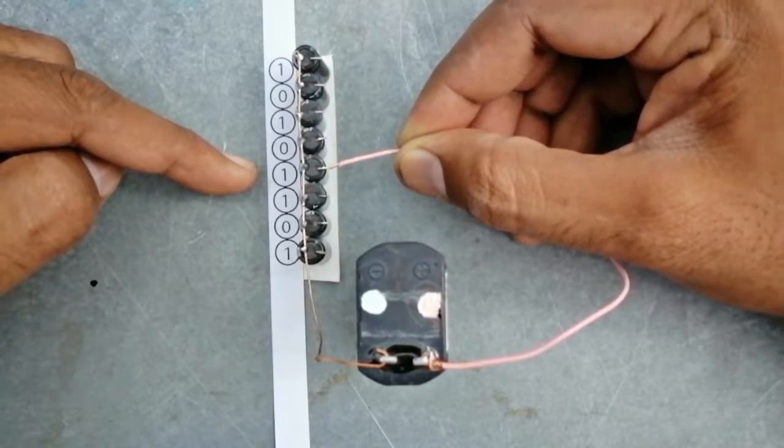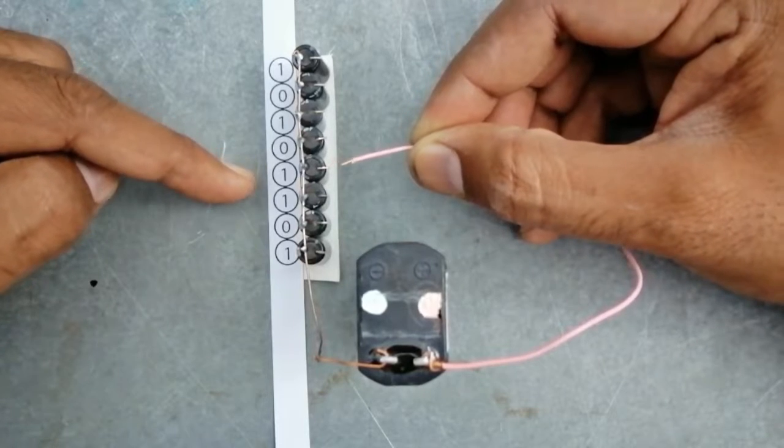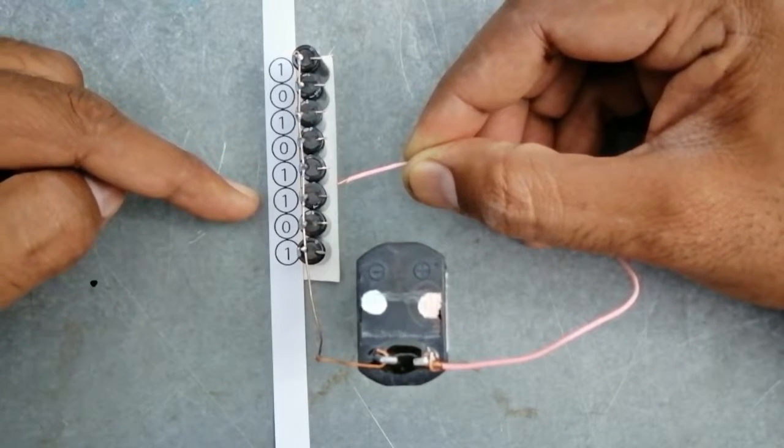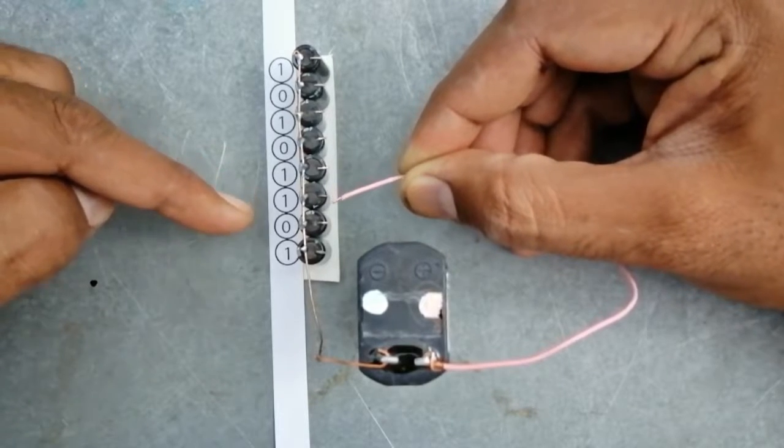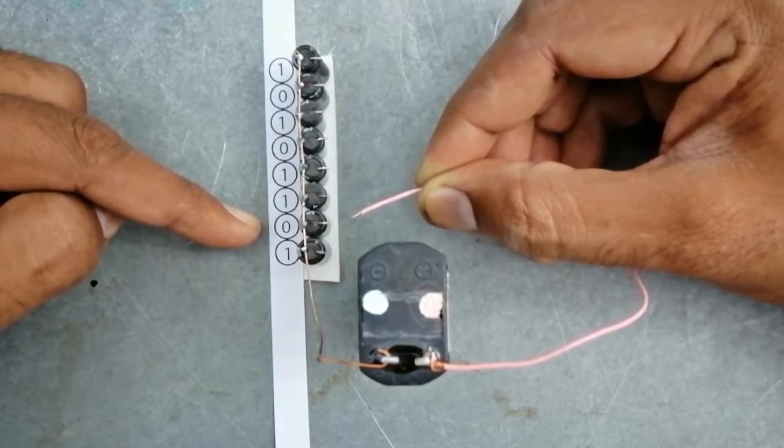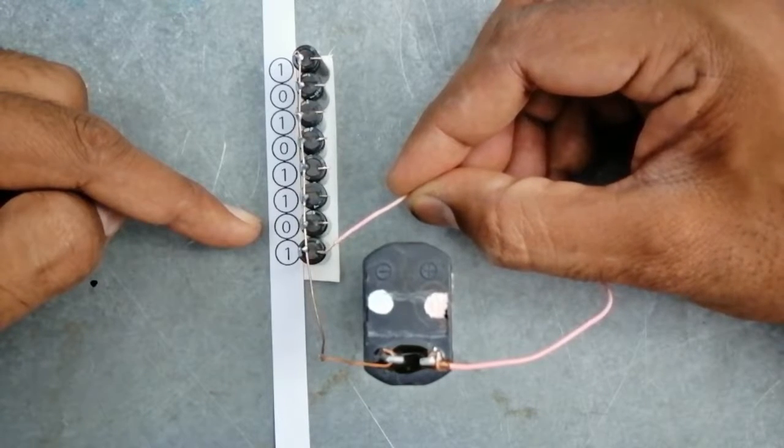The next bit consists of one so we'll attach the wire with capacitor to charge it. The next bit also consists of one so it will also be charged. The next value is zero so we don't touch it. The next value is one so we will charge the capacitor.